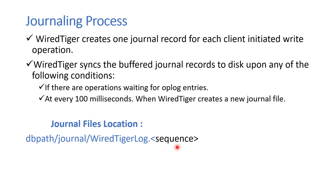By default, WiredTiger creates one journal record for each client-initiated write operation. WiredTiger syncs the buffered journal records to disk in one of two scenarios: every 10 seconds or 100 milliseconds, or when the journal file size reaches 100 MB — at which point it creates a new journal file.